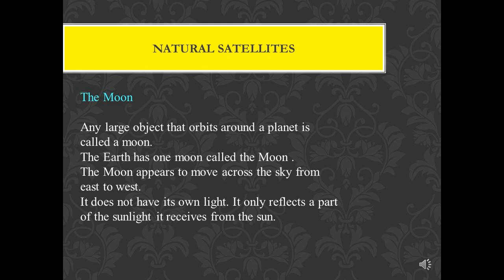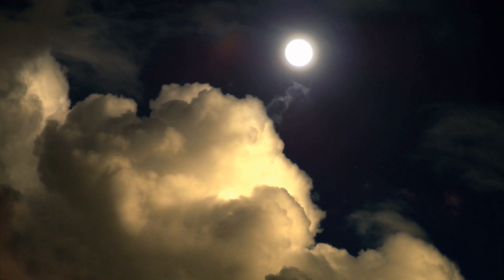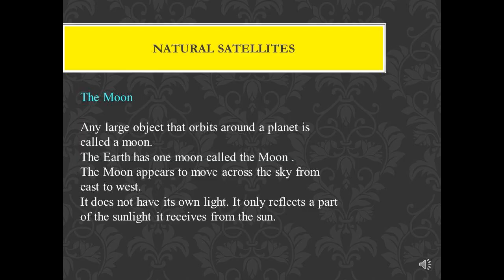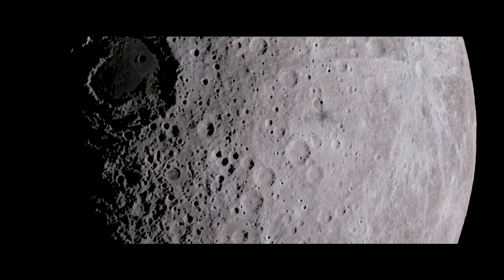First, we will talk about natural satellites — our moon. The moon is Earth's natural satellite. If you look at it at night, it is shining with a white light. But the moon does not have its own light. Planets also do not have their own light. Only the sun is a luminous body. The other planets and satellites are non-luminous bodies.